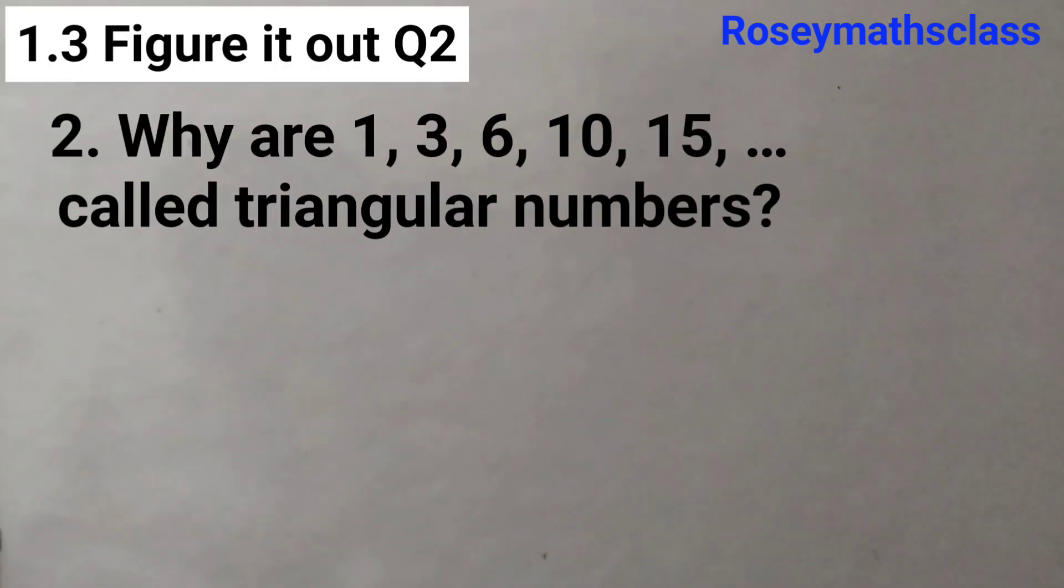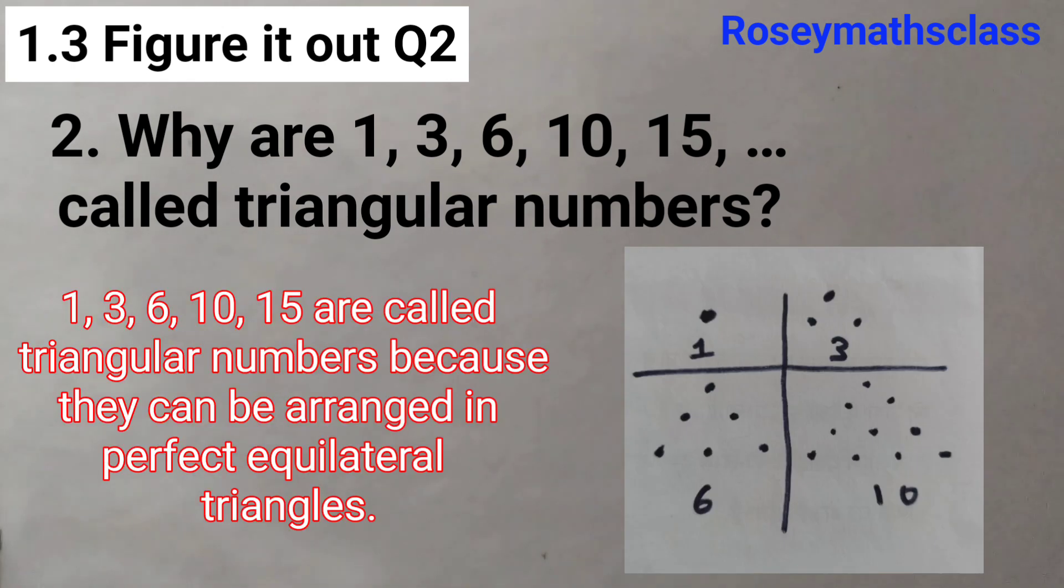The first part is, why are 1, 3, 6, 10, 15 called triangular numbers? The answer is, 1, 3, 6, 10, 15 are called triangular numbers because they can be arranged in perfect equilateral triangles.